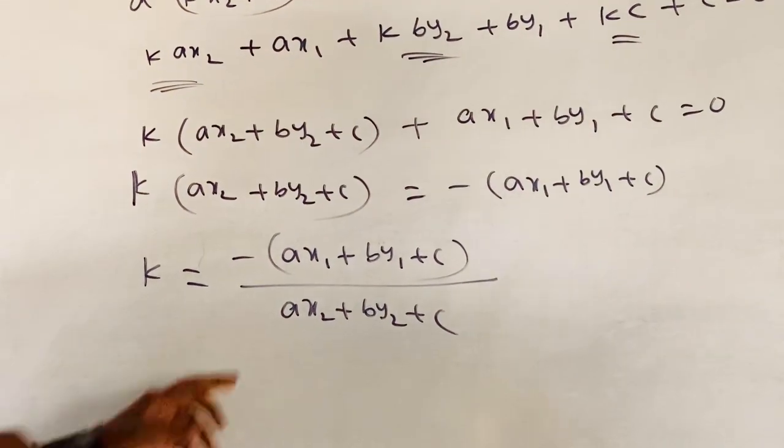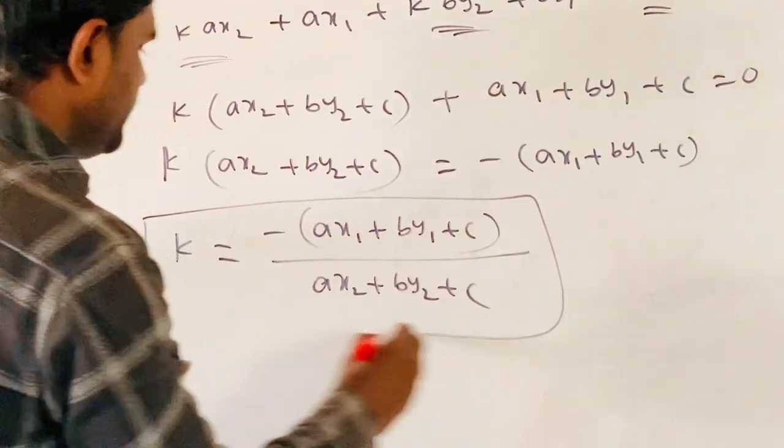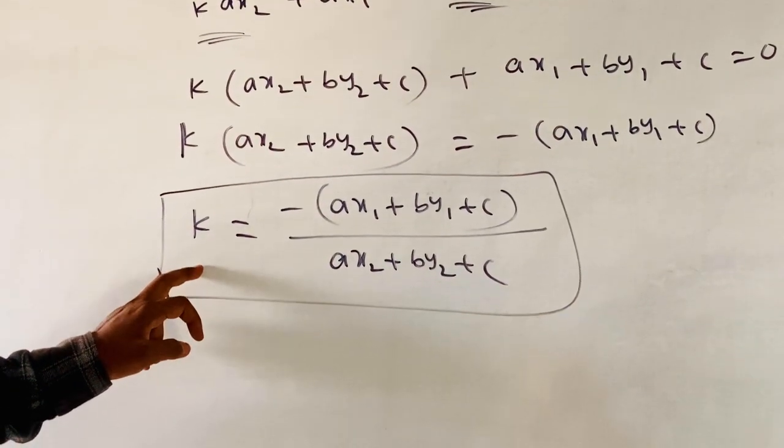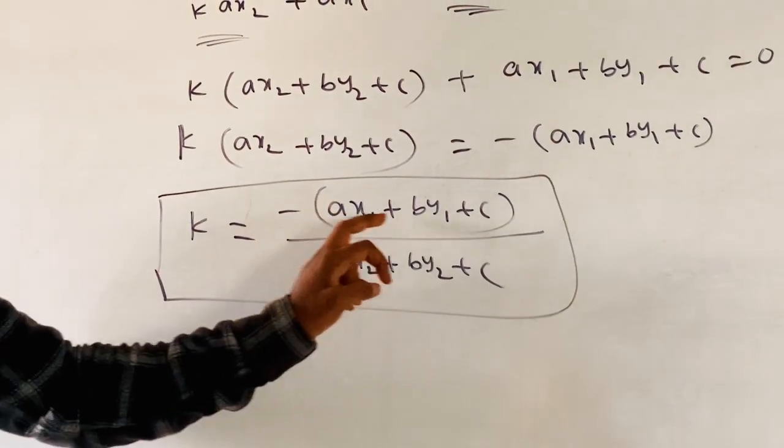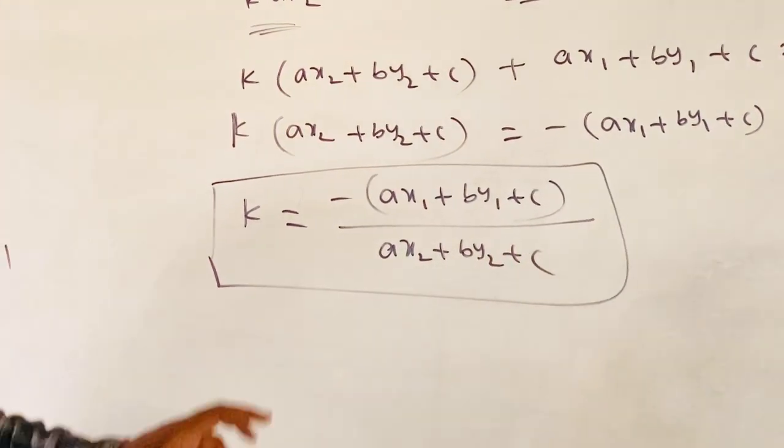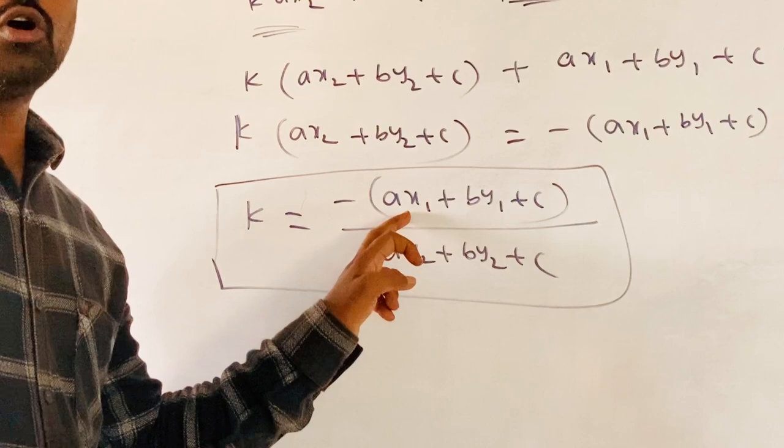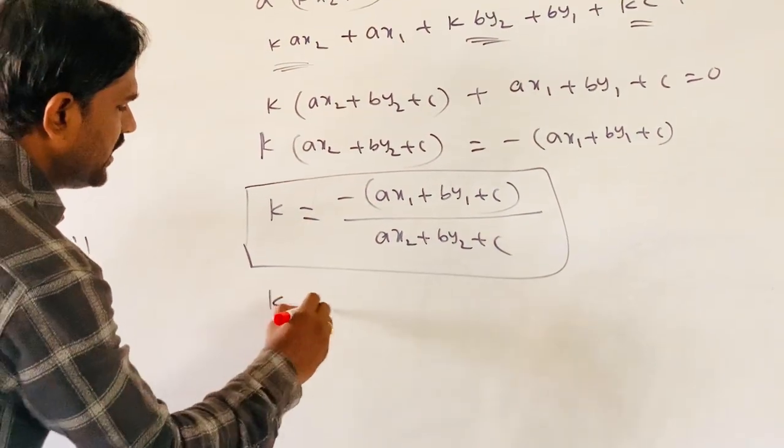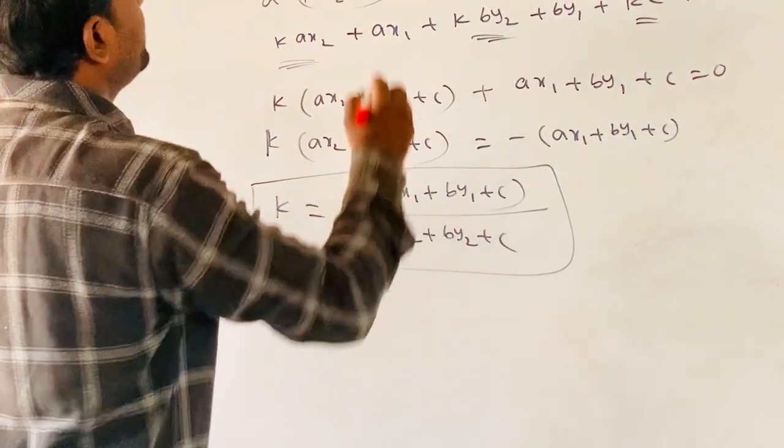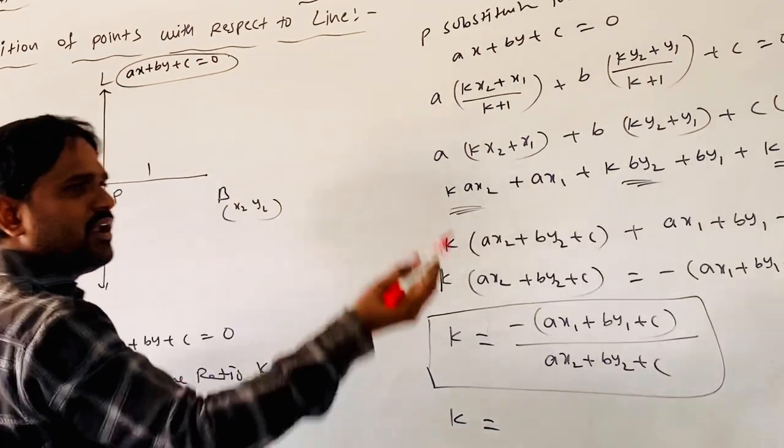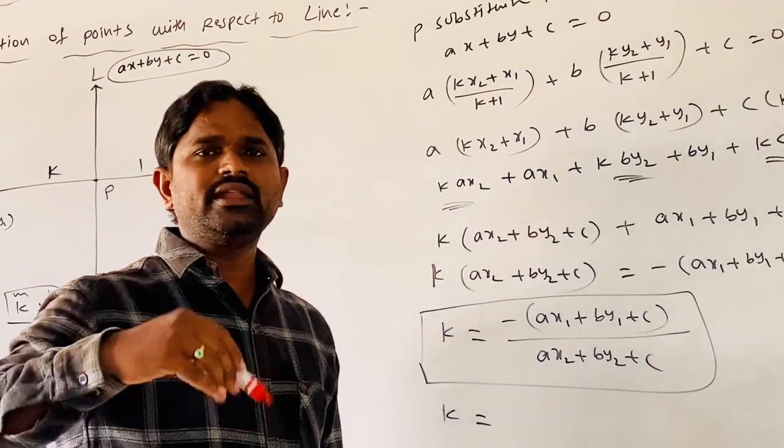By using this condition, we find K, which is a real number in the form minus (AX1 plus BY1 plus C)/(AX2 plus BY2 plus C). Now we introduce notation for the straight line. L is identically equal to AX plus BY plus C. What is L11 and L22?